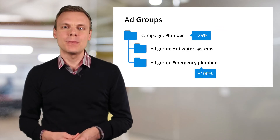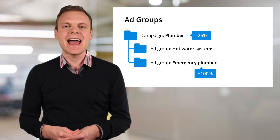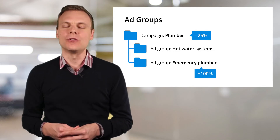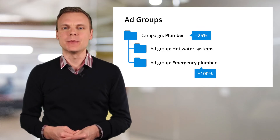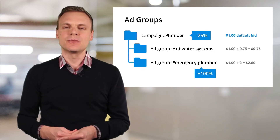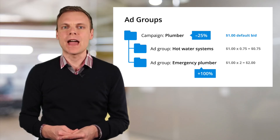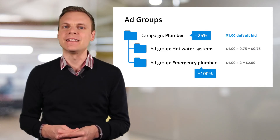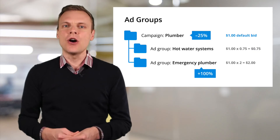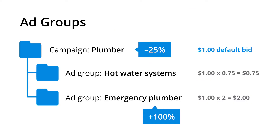You also have the option of applying mobile bid adjustments at the campaign and ad group levels for more granular control of your final bids. For example, if the campaign has an overall mobile bid adjustment of minus 25%, with a default bid of $1 our bid would reduce to $0.75 for mobile users. If we then have a mobile bid adjustment applied at the ad group level, this overrides the campaign level adjustment — so the ad group level bid would increase from $1 to $2. The ad group level adjustment is applied since it's more granular, and the campaign level adjustment is ignored.